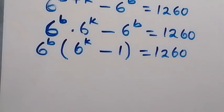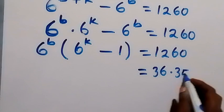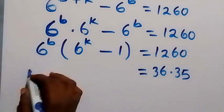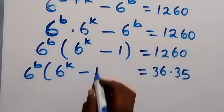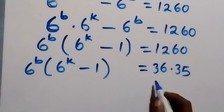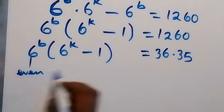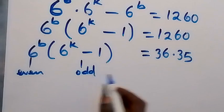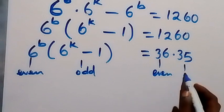We can also write 1260 as a product of two numbers — specifically 36 multiplied by 35. So 6^b times (6^k minus 1) equals 36 times 35. Notice that 36 is even and 35 is odd, and similarly 6^b is even and (6^k minus 1) is odd.